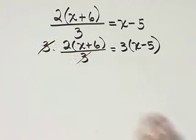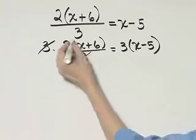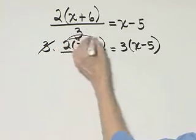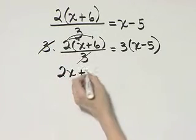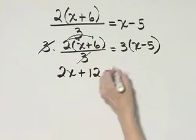Now the left side, the 3's divide out like we want. And I'll go ahead and use the distributive property. 2 times x is 2x plus 2 times 6 is 12 is equal to,